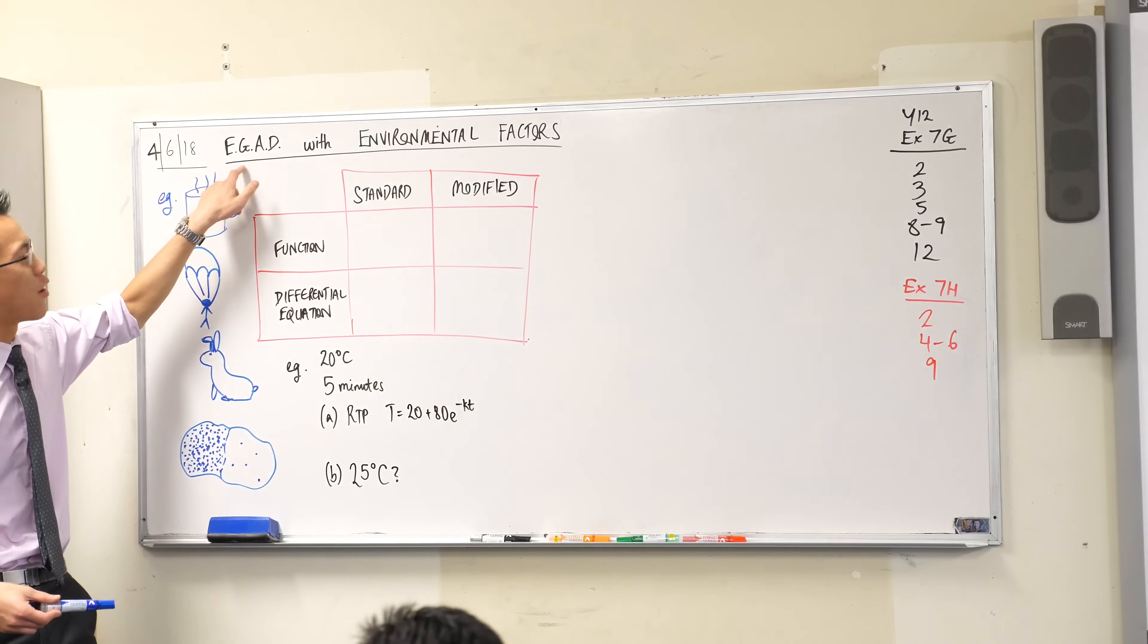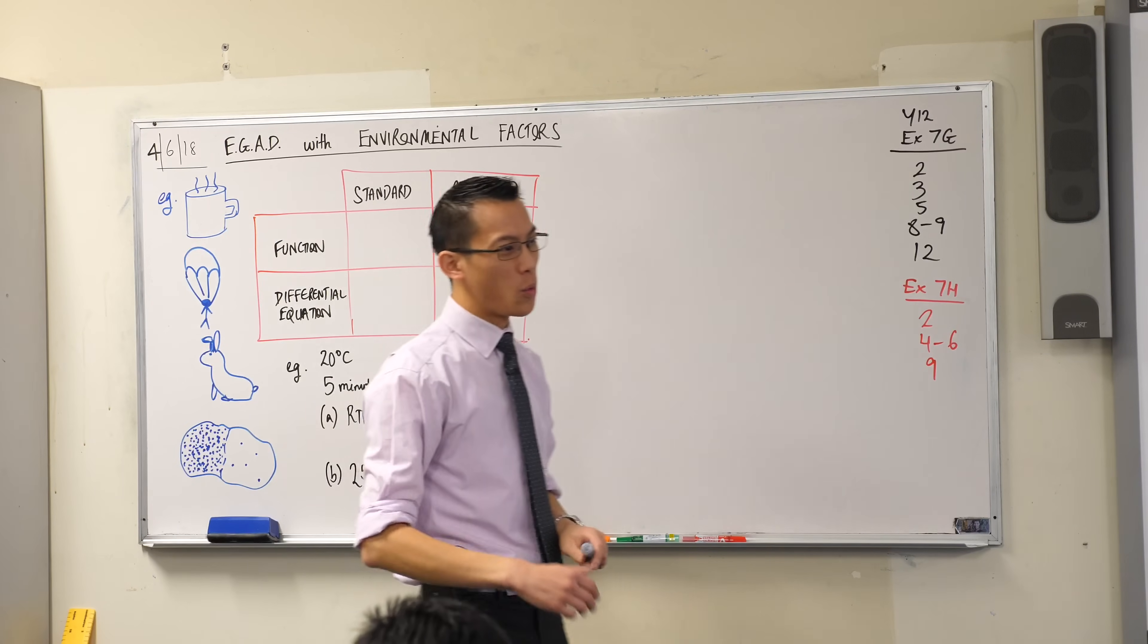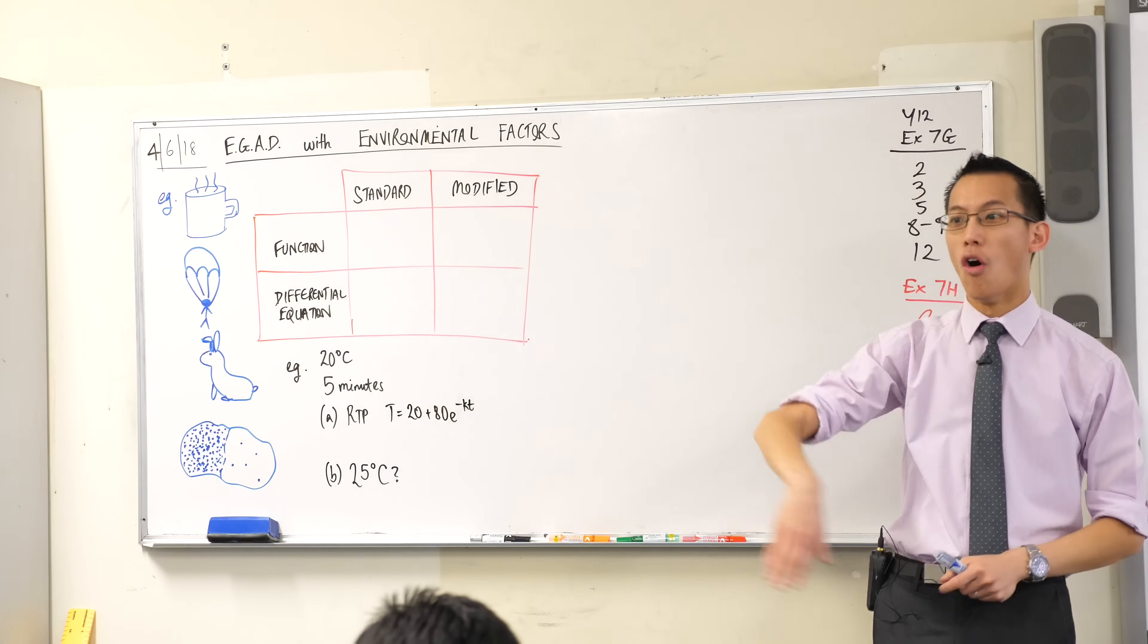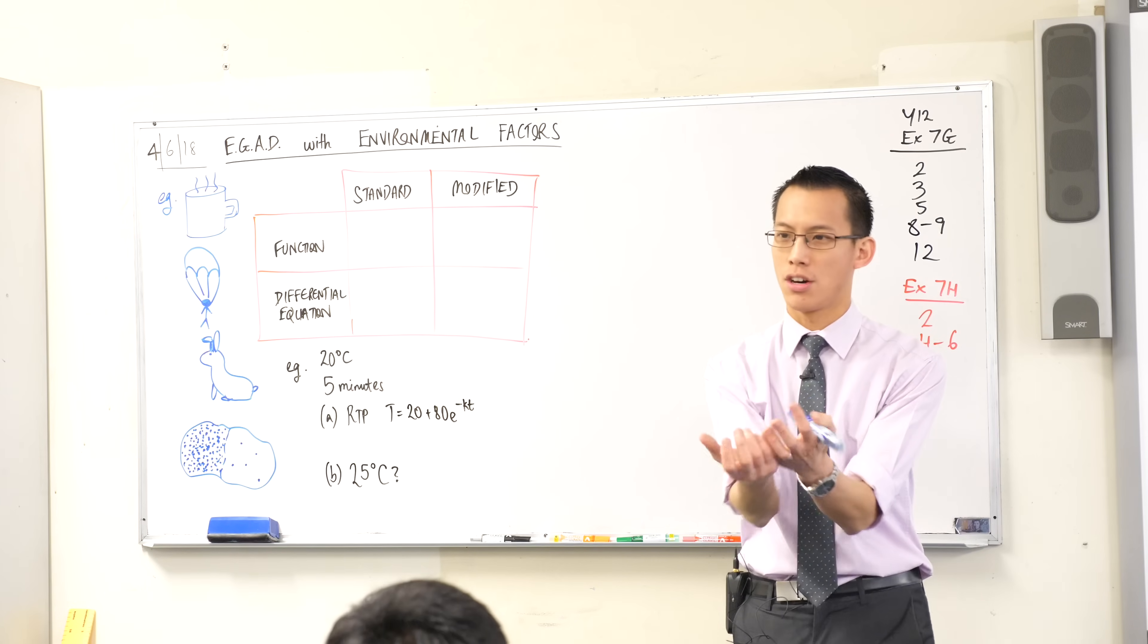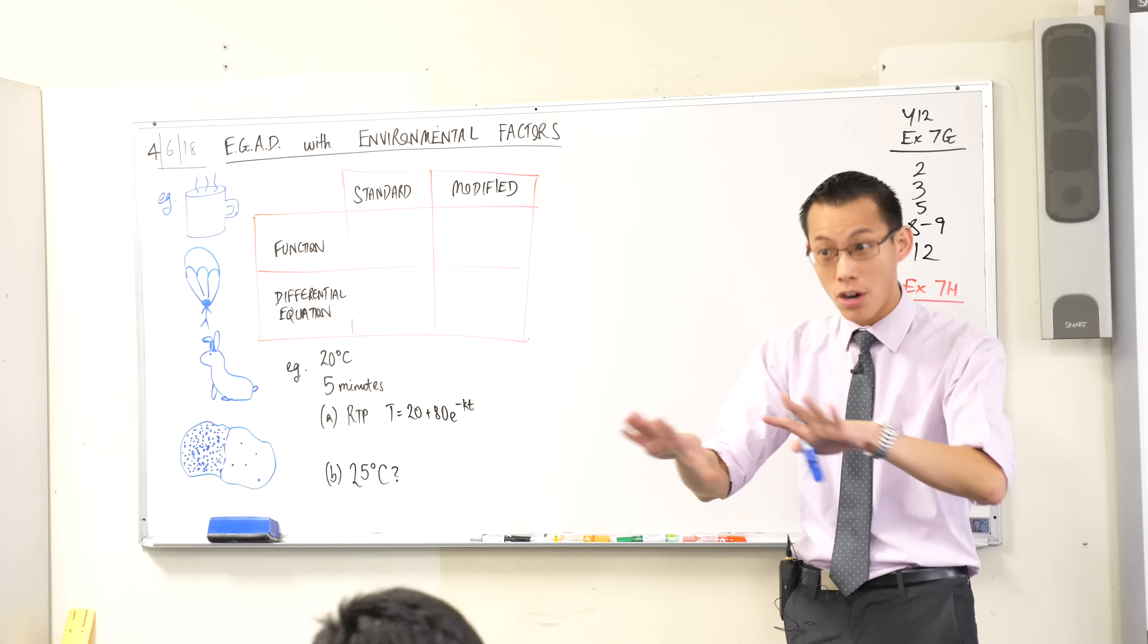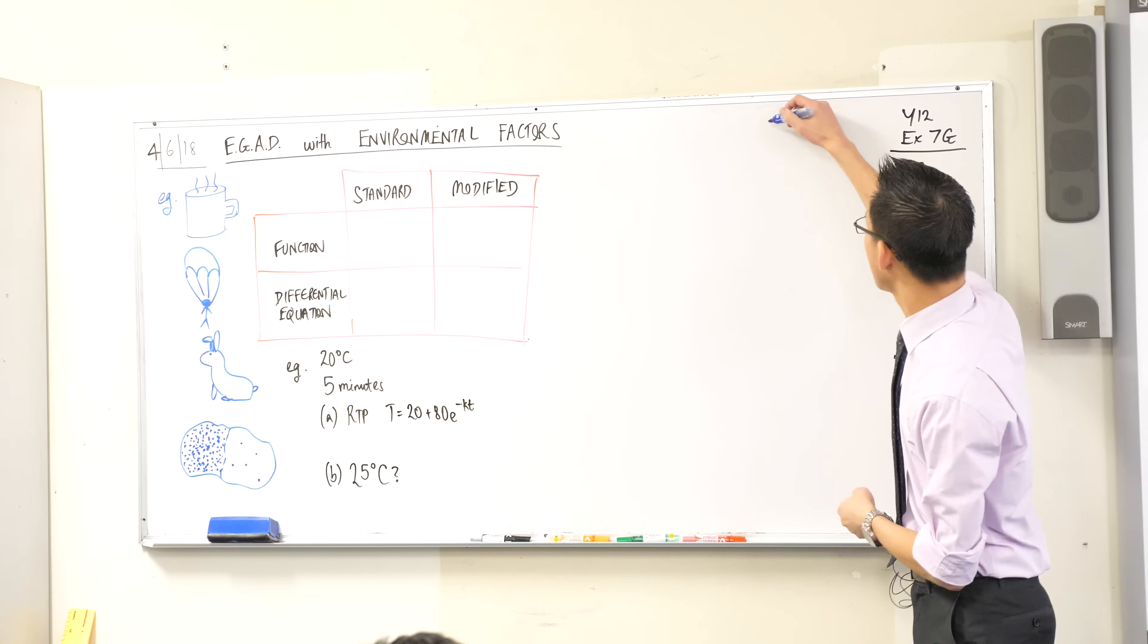We've so far been looking at exponential growth and decay in situations where we either are growing from a state of zero or we're decaying to a state of zero. Like radioactive decay, after billions of years the thing will disappear, it'll be gone.